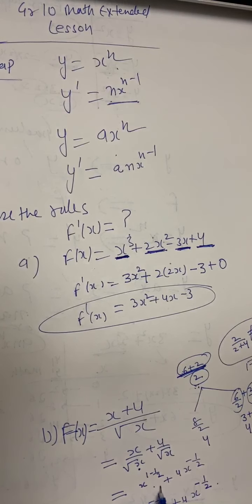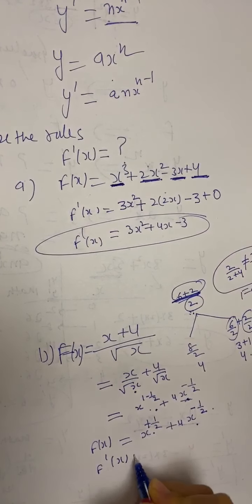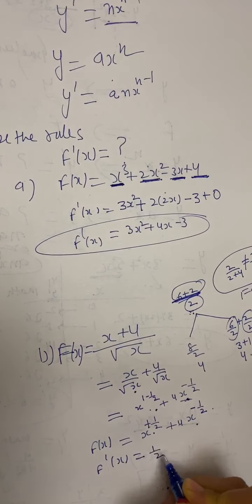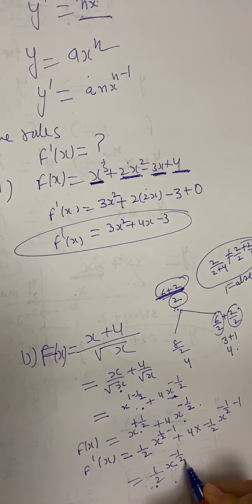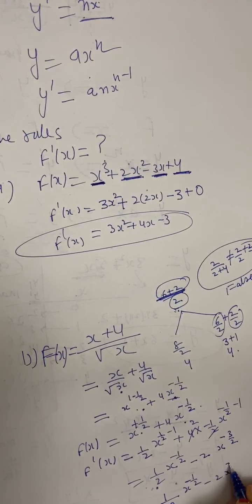So f(x) simplifies to x to the power of one-half plus 4x to the power of negative one-half. Now taking the derivative: f'(x) equals one-half times x to the power of one-half minus 1, plus 4 times negative one-half times x to the power of negative one-half minus 1. This gives one-half times x to the power of negative one-half, and the 2s cancel in the second term, giving minus 2x to the power of negative three-halves.